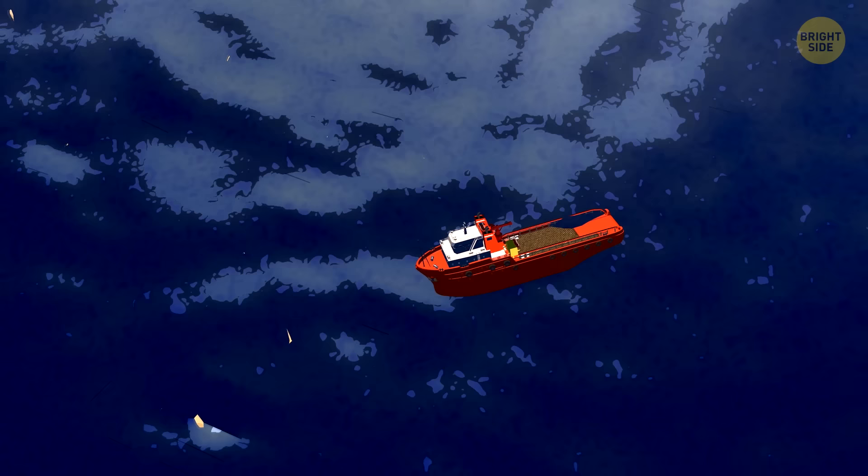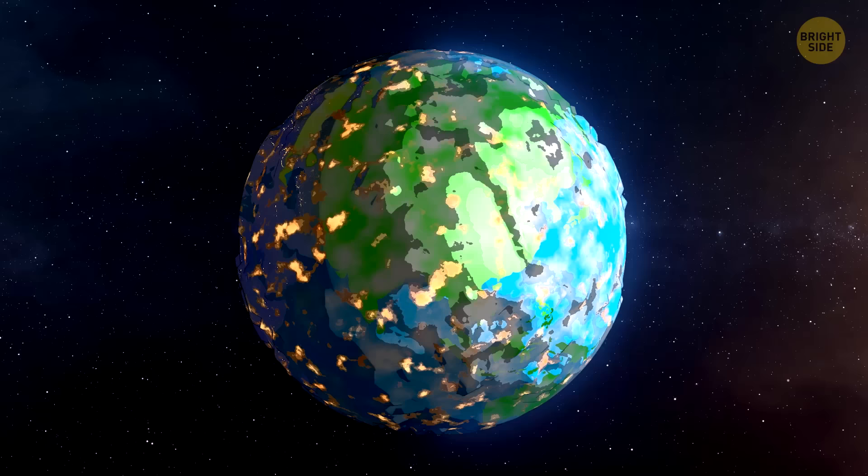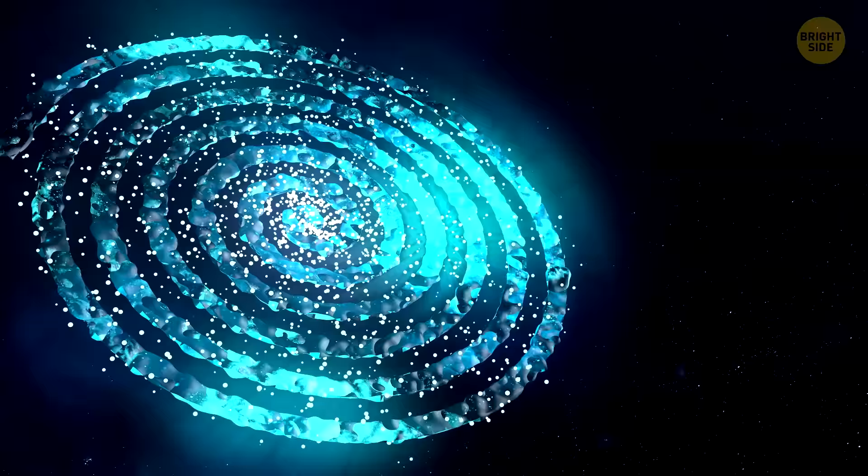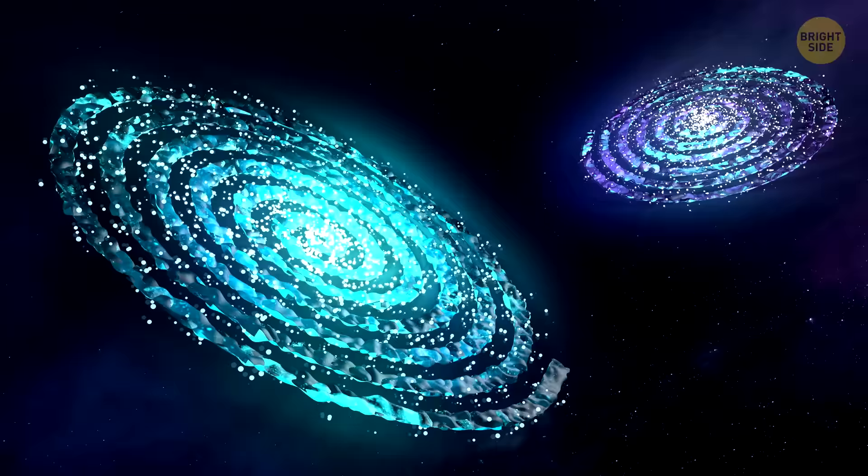At 2 billion years' mark, the Sun's luminosity will make oceans evaporate on Earth. The life on our planet will cease to exist in all but the simplest forms, which will soon go extinct as well.